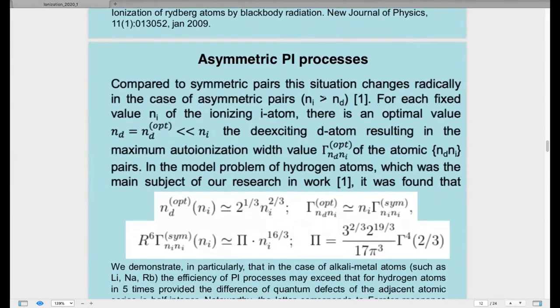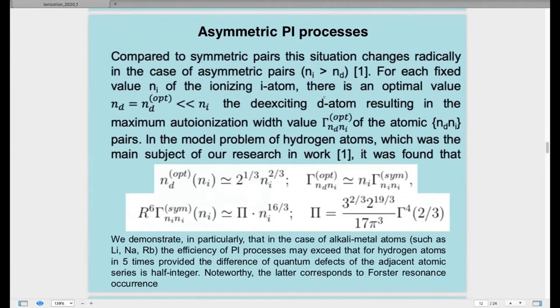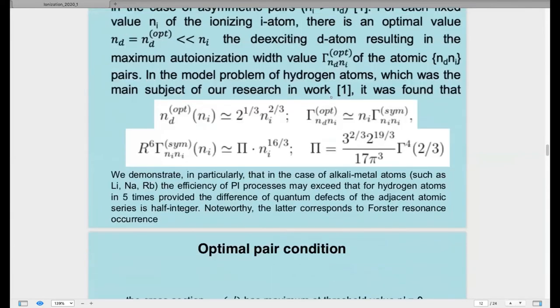So we can also examine what will happen if we analyze asymmetric Penning ionization processes when n_e and n_d, n_e is not equal compared to symmetric pairs. This situation changes radically in the case of asymmetric pairs n_e greater than n_d. For each fixed value n_e of the ionizing atom there is optimal value of pair n_d, much smaller than n_e, exciting the atom resulting in the maximum autoionization width of the atomic pair. In the model problem of hydrogen atom which was the main subject of our research earlier,